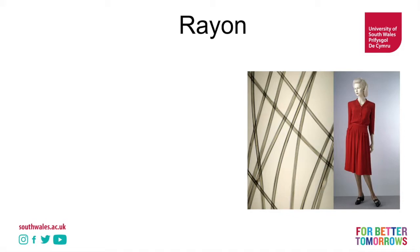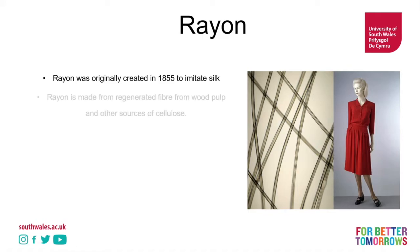Let's talk about rayon first. Here's a rayon dress on the far right — a Molyneux dress developed in 1942 as part of the utility clothing scheme. You can find this dress in the Victoria and Albert Museum. Here's some rayon under a microscope — it looks semi-transparent. It was developed in 1855 to imitate silk, and you can see it has some similarities to a silk fiber when under magnification.